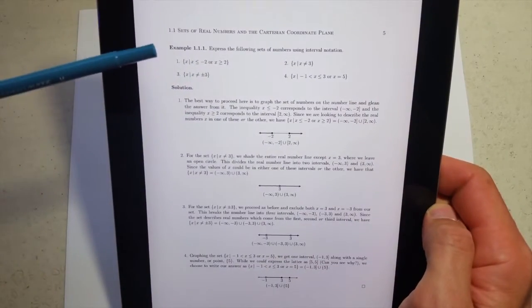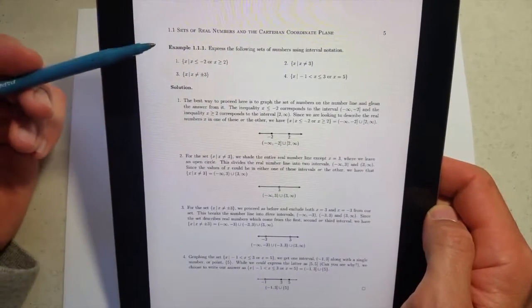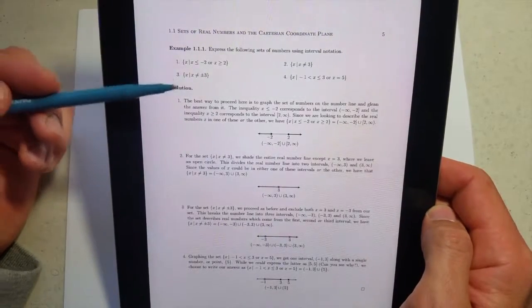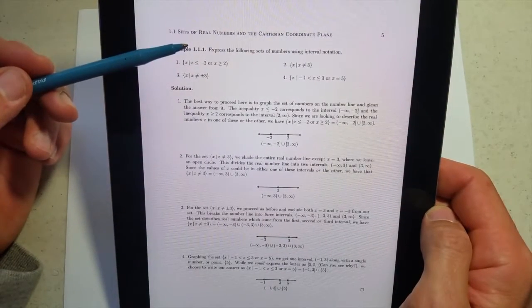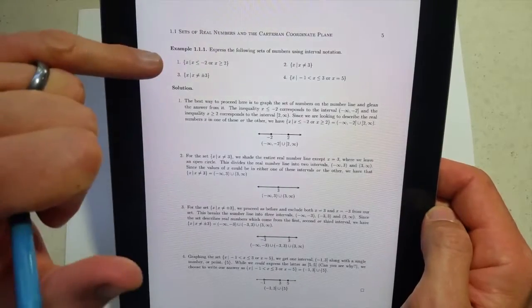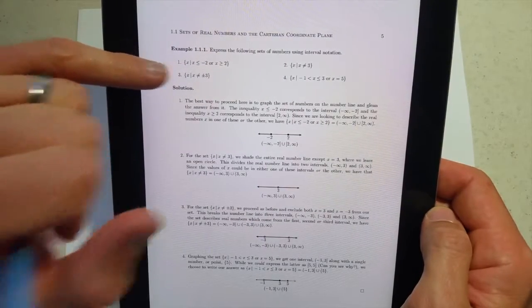So up next in the book is an example, and I very strongly recommend you look at this. Express the following. It says a number using interval notation. We have a set builder and we want to write in interval notation.